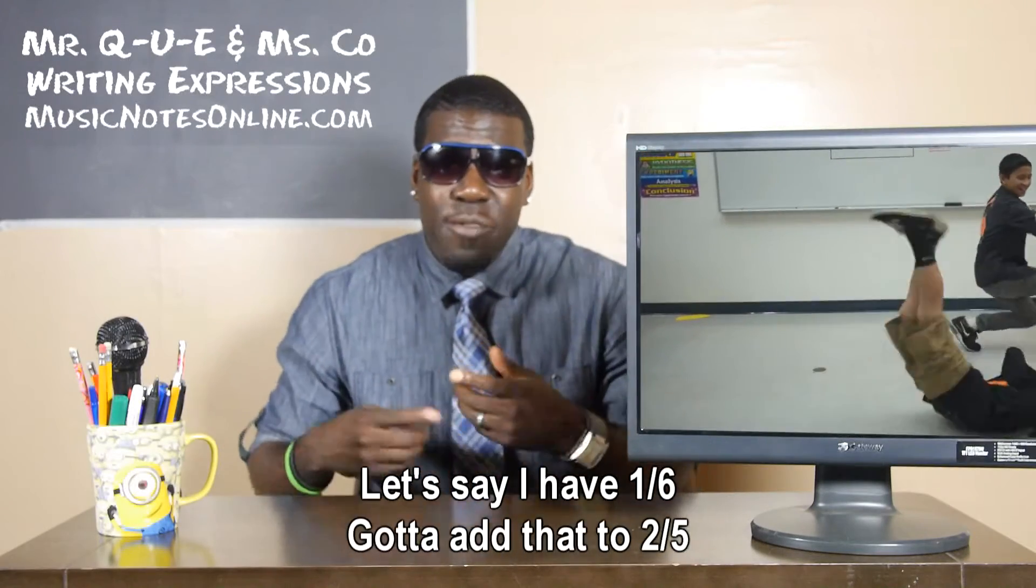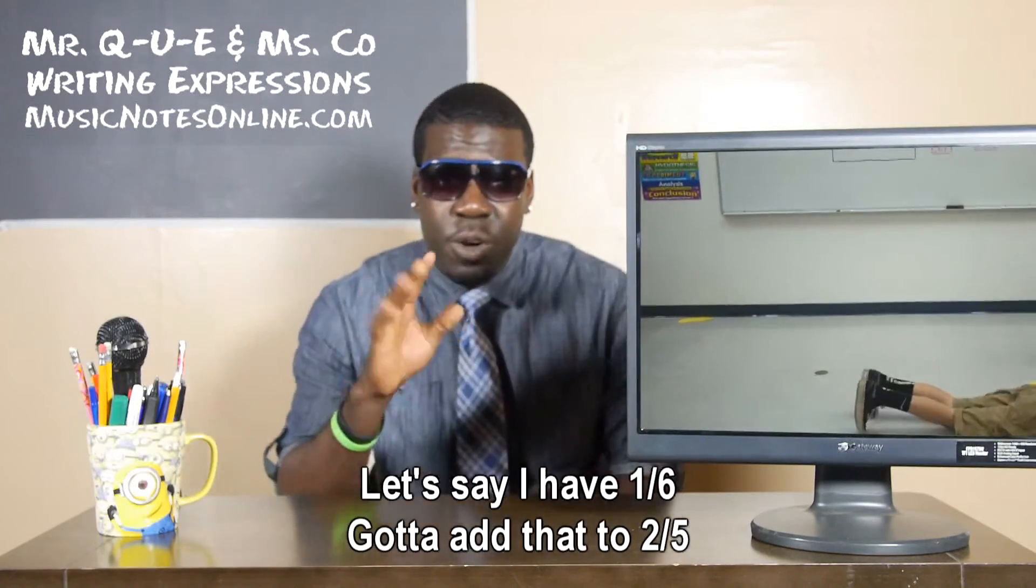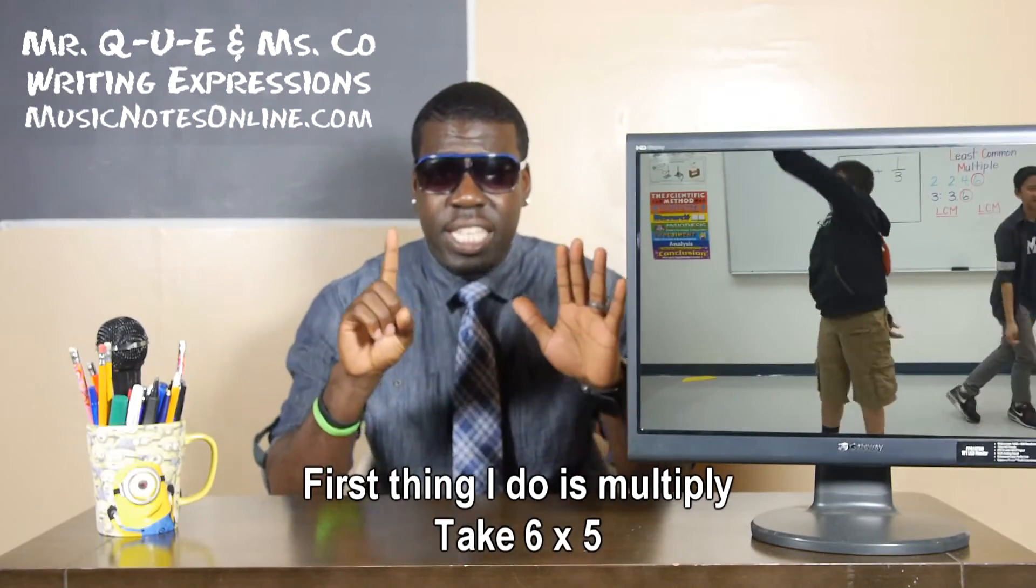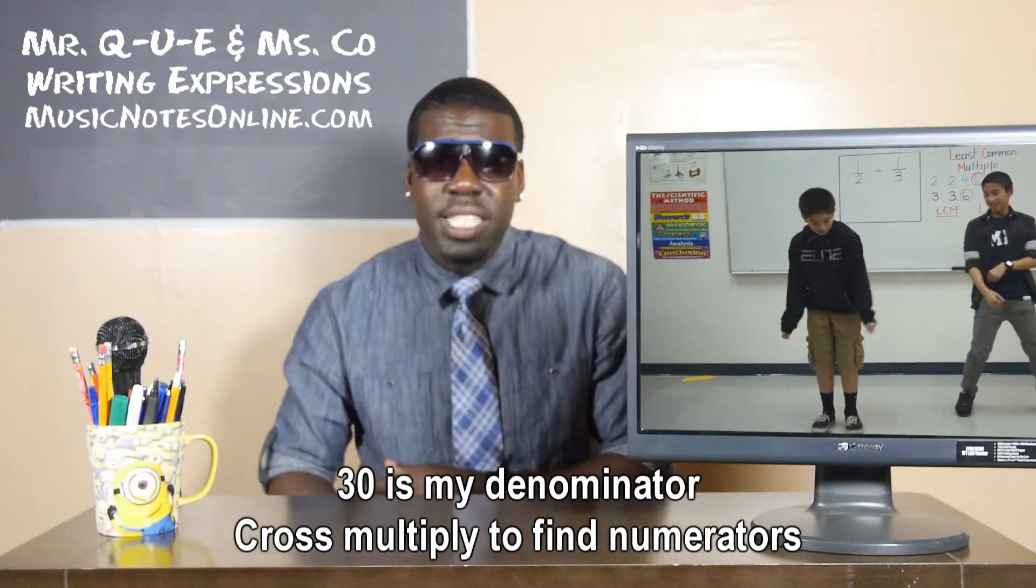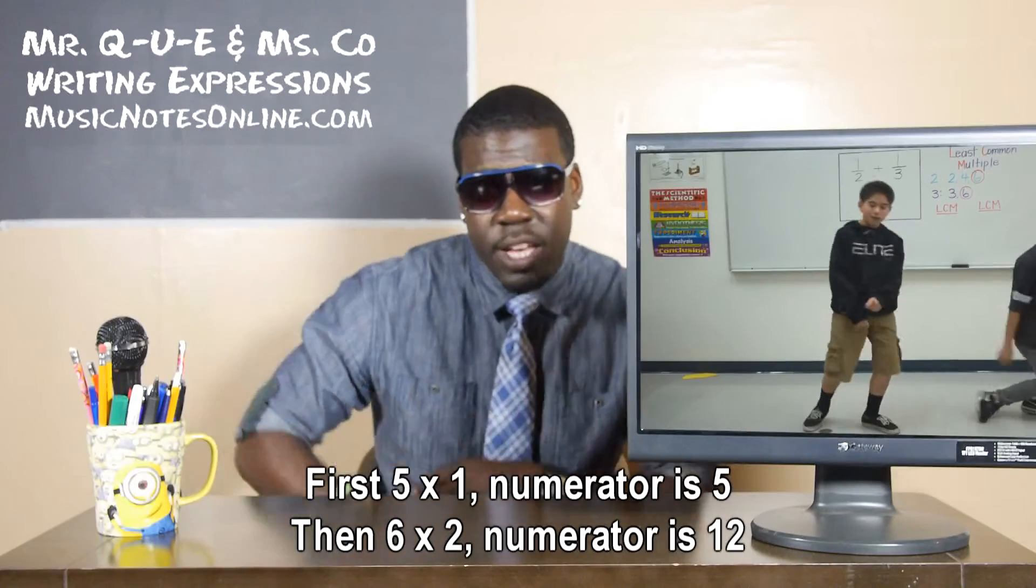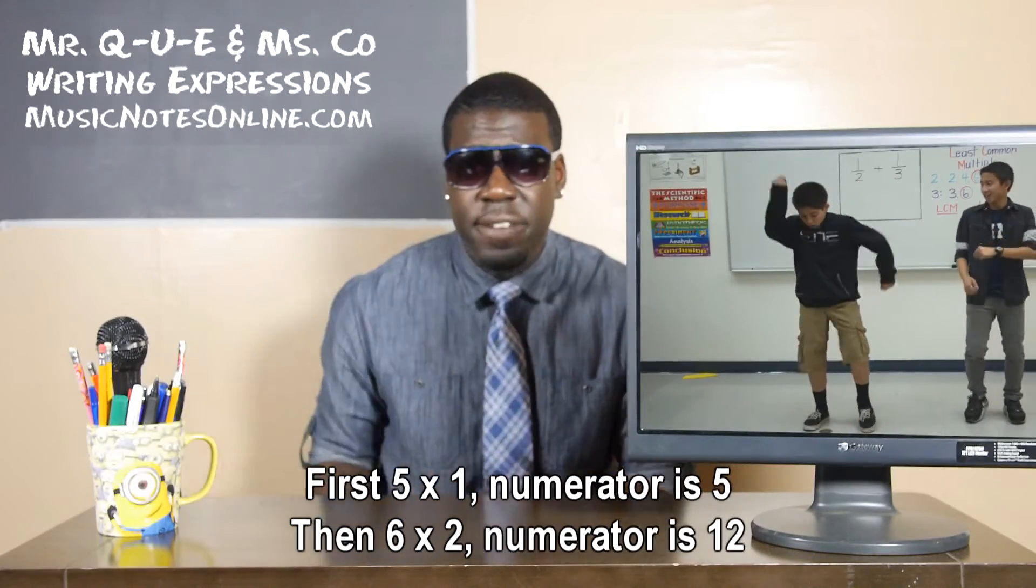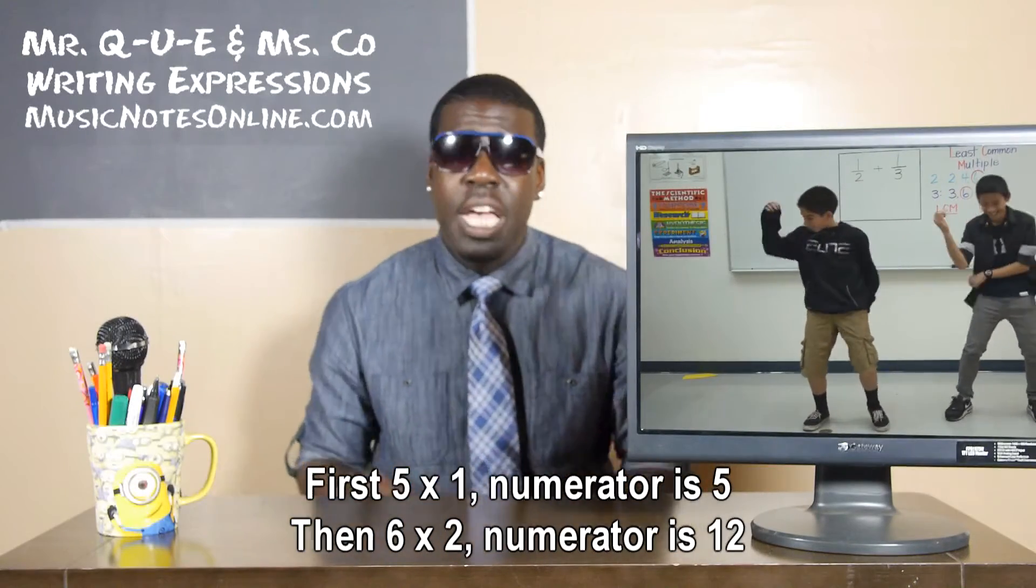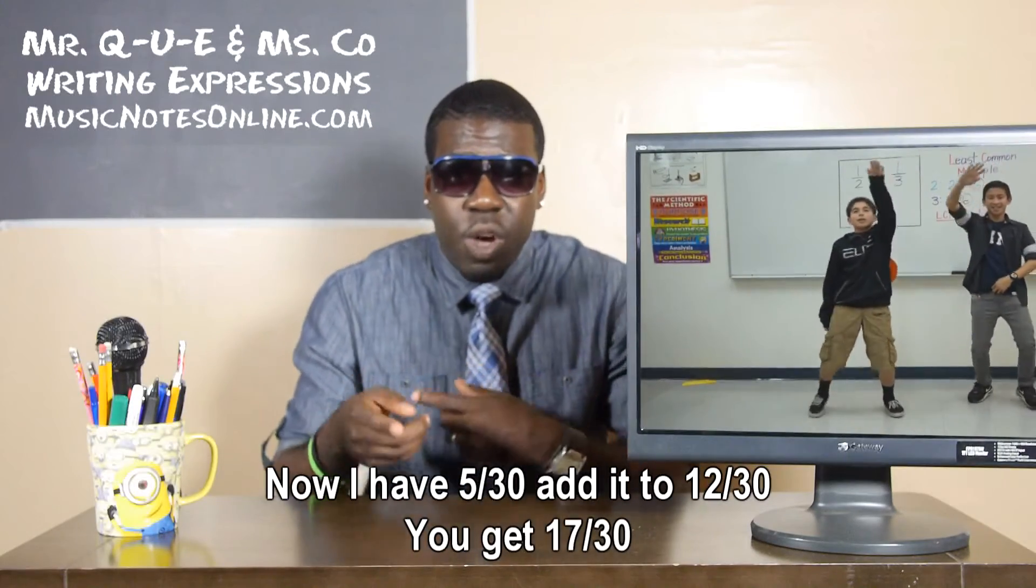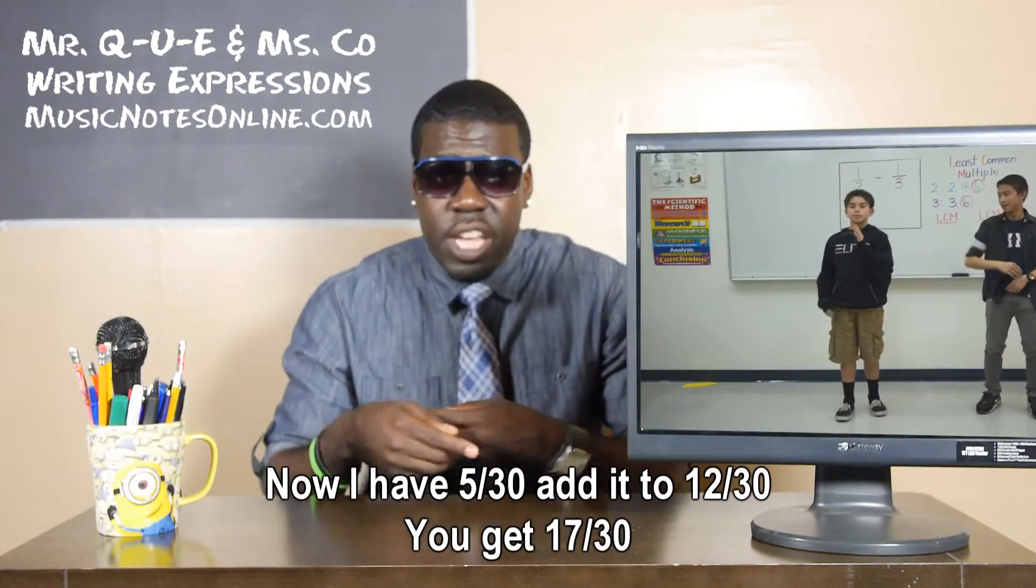Let's say I have one sixth, gotta add that to two fifths, make the bottoms match when I do this. First thing I do is multiply, take six times five, thirty is my denominator, cross multiply to find numerators. First five times one, numerator is five. Then six times two, numerator is twelve. Now I have five over thirty, add it to twelve over thirty, you get seventeen over thirty.